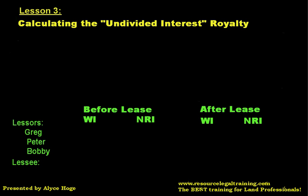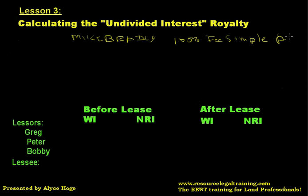In our last lesson, we talked about if someone was a 100% owner in the property. Let's say, for example, that Mike Brady — y'all remember the Brady Bunch? — owns 100% interest, which sometimes we call 100% fee simple, or fee simple absolute, but it's really the same thing. So he owns 100% fee simple absolute, which means he owns the surface plus the minerals.